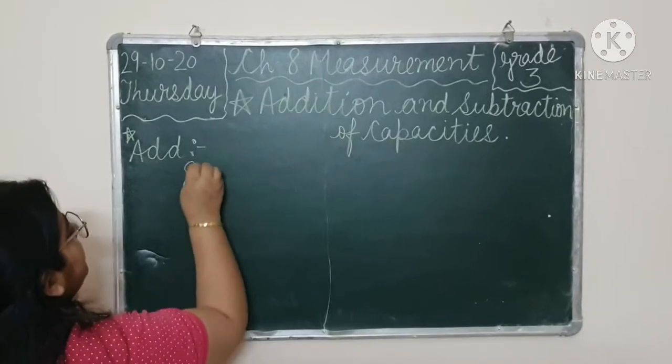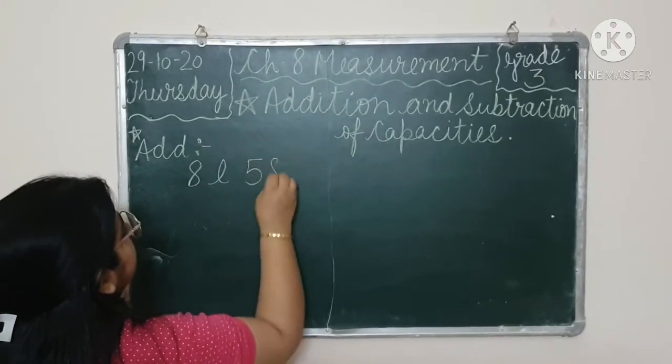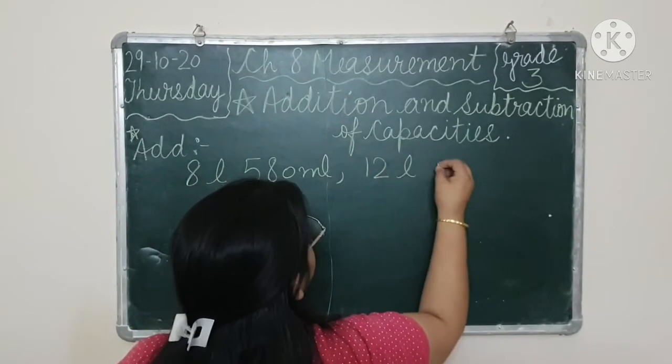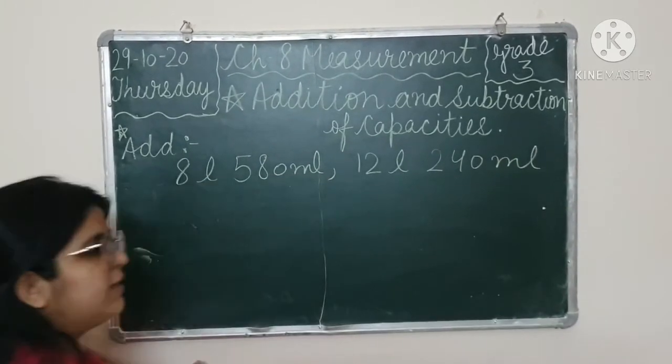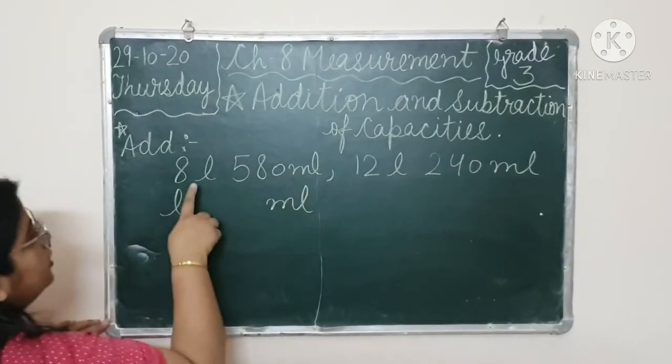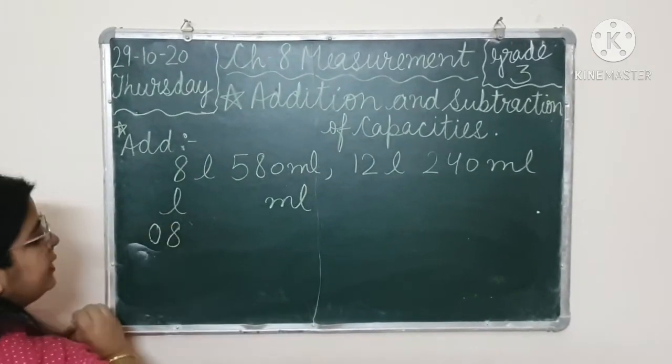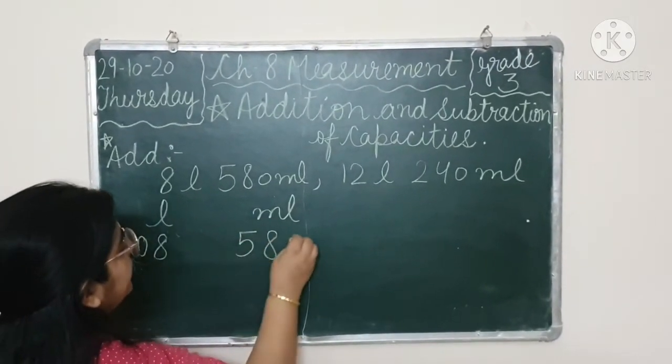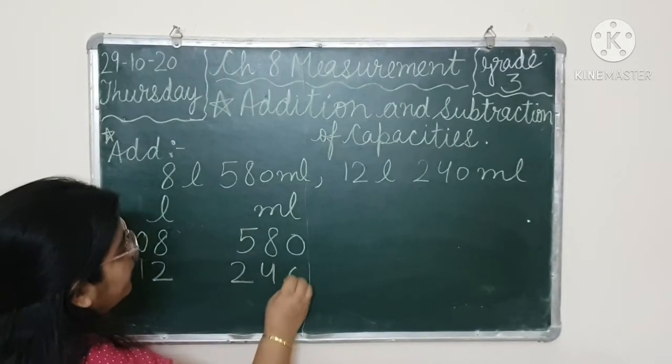We take another example. Suppose we have 8 liter, 580 milliliter. And next number is 12 liter, 240 milliliter. Now we have to add this. Firstly, we write in a column, liter and milliliter. So, here is 8. When we have a single digit value, we write 0 ahead so our top-bottom balance is clear. So, 580 milliliter. Next is 12 liter, and 240 milliliter.